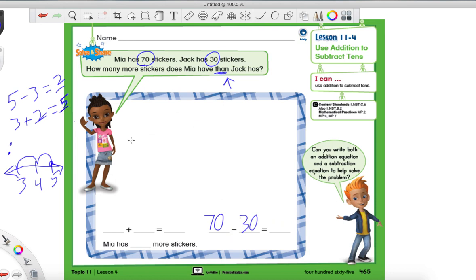So how we could set up this addition sentence is, we know the total, we know the whole number, which is 70. So that goes on the other side of the equal sign, because it is the total. So when we add, the total goes at the end. And our 30, that is a part. So the part can go over here in front of the plus sign. And now we just need to know what number we can add to 30 to get to 70. And guess what? When we figure that out, we're just going to move it on over here, and it will be the same answer.